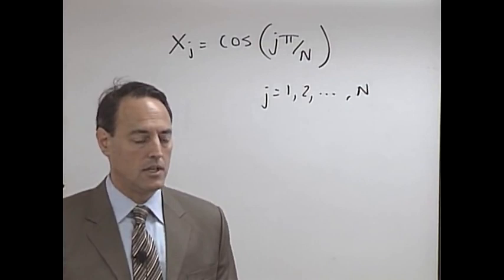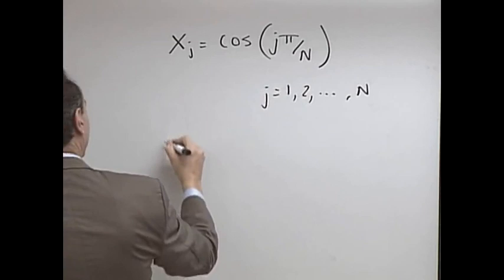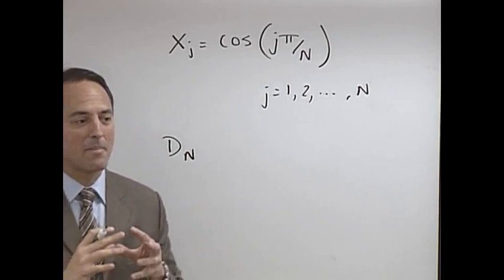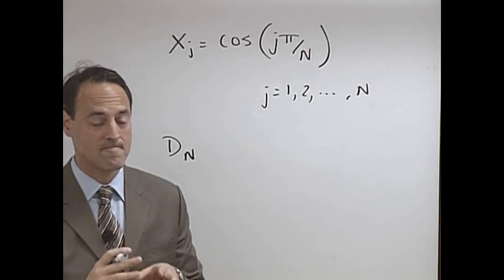The other thing we want to construct with this is a differentiation matrix. We call this D of N. Now of course, this is where there was a lecture that would have, let's say supposedly happened in the past, but it's actually gonna happen in the future.